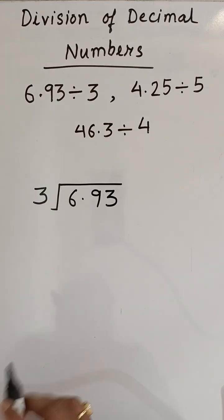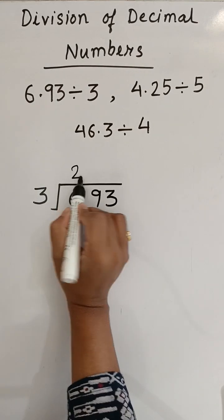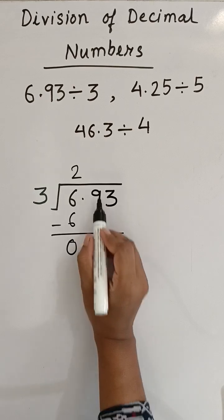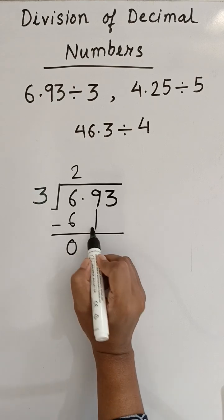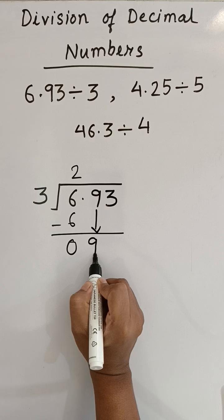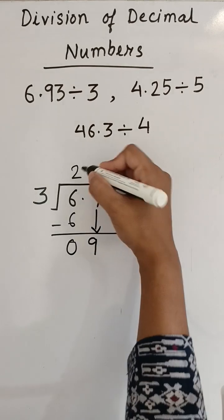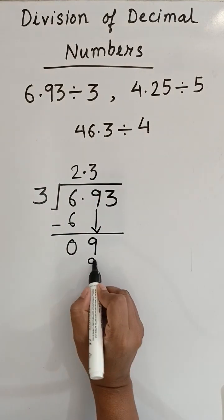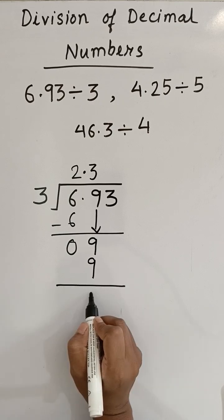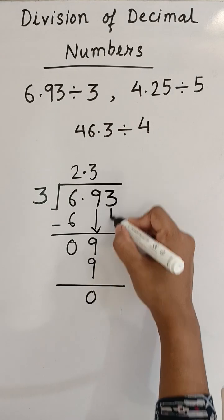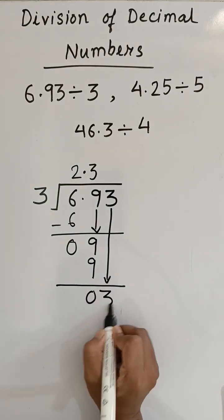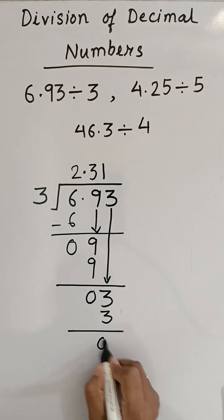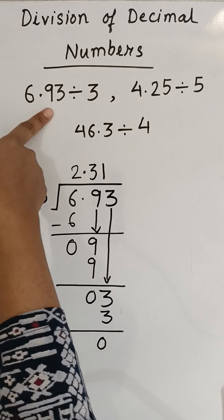3 into 2 is 6, 6 minus 6 is 0. Now you have to bring the 10th number down, which is 9, and when you are bringing the 10th number down, just put the decimal point here in the quotient. Now 3 into 3 is 9, then minus 0, then the 100th number will come down, which is 3. Now 3 into 1 is 3, remainder 0.